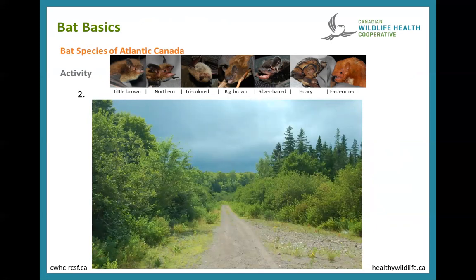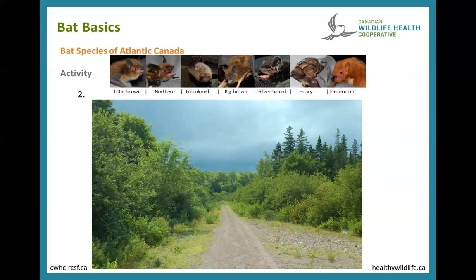The second habitat is more open — which rules out the forest-dwelling northern myotis. This picture shows a good corridor with forest on either side, which would be used by the little brown myotis. The tricolored bat and big brown bat would also use this edge habitat. Any of the migratory species — silver-haired bat, hoary bat, and eastern red bat — might use this habitat as well.